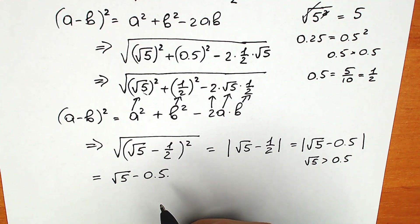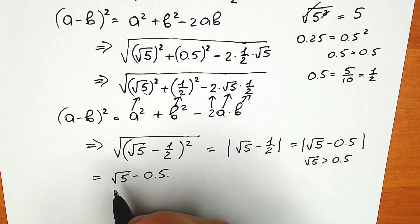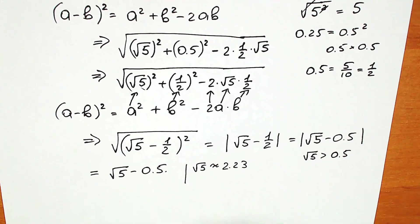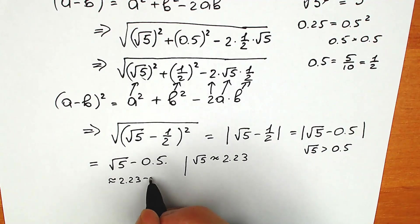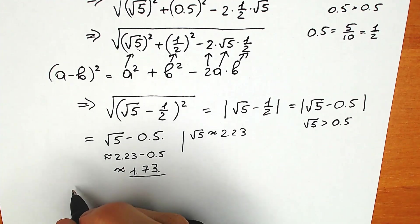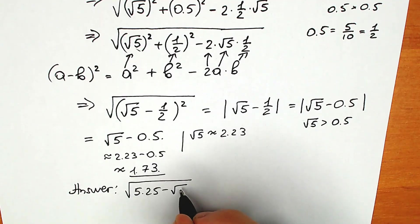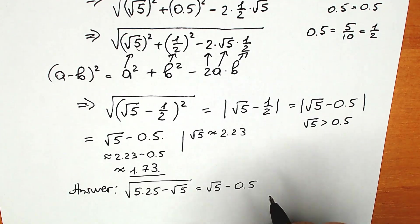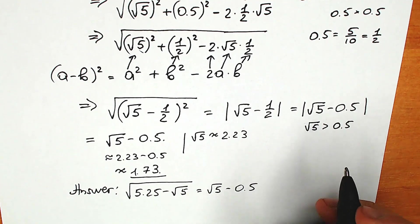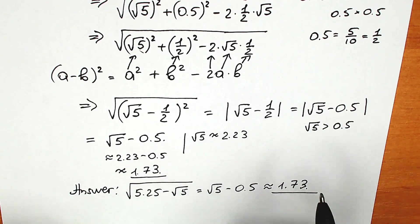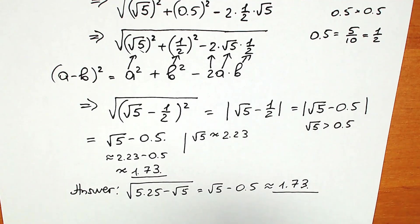If you're interested in an approximate answer, you can estimate using the fact that √5 ≈ 2.23. So this equals 2.23 minus 0.5, which gives approximately 1.73. It's not necessary — it's up to you — but sometimes you can estimate the answer this way, even if you wouldn't know something like √67 or √75 off the top of your head.